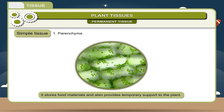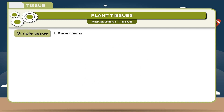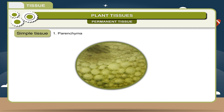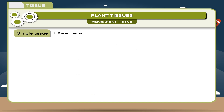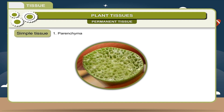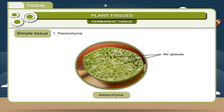Function: 1. It stores food materials and also provides temporary support to the plant. 2. Some parenchyma cells may also contain chlorophyll, hence are called chlorenchyma. 3. Parenchyma cells present in aquatic plants have star-like air spaces called aerenchyma, which give buoyancy to the plants and help them to float.